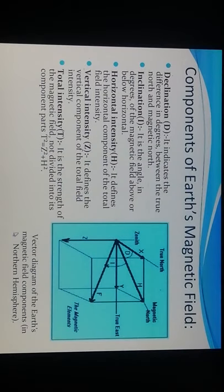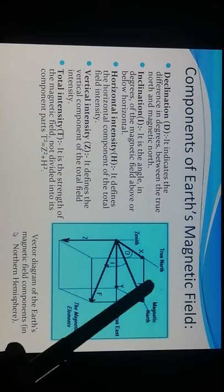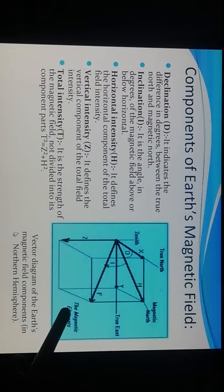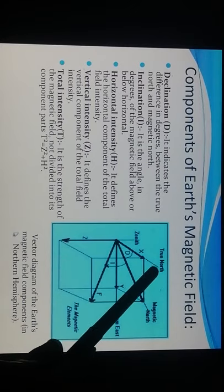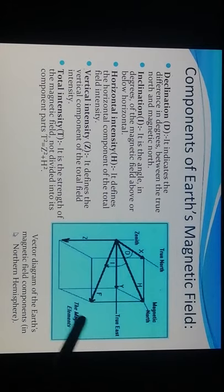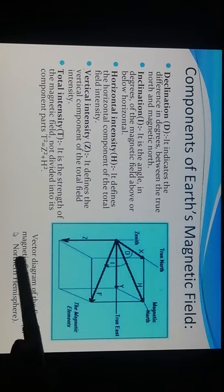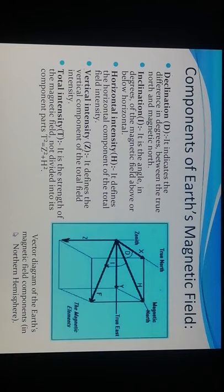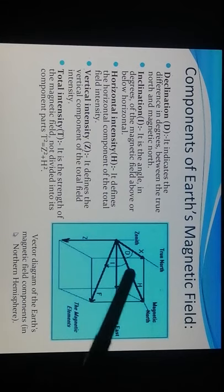Components of the earth's magnetic field: This is the diagrammatic representation of the earth's magnetic field components in the northern hemisphere. Declination (D) indicates the difference in degrees between the true north and magnetic north. Inclination (I) is the angle in degrees of the magnetic field above or below the horizontal level. H is the horizontal component of the total field intensity.